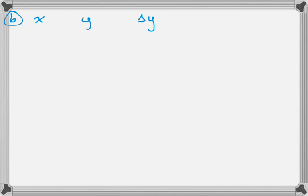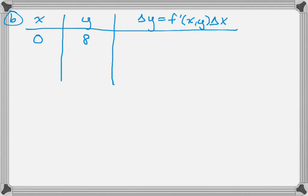The next part is an Euler's method question. So we have x, y, delta y, and then delta y is f prime of x, y, delta x. We're supposed to use two equal step sizes, so delta x will be 1 half in this case. So fill in the point that you're given, which is 0, 8. And then don't forget delta x.